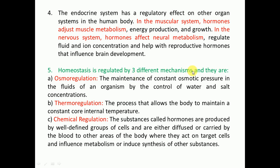Homeostasis is regulated by three different mechanisms. Osmoregulation is the maintenance of constant osmotic pressure in the body fluid of an organism by control of water and salt concentration. Thermoregulation is the process that allows the body to maintain a constant core internal temperature. Chemical regulation involves substances called hormones, produced by defined groups of cells or glands, which are diffused or carried by the blood to target cells and influence metabolism or induce synthesis of other substances to maintain homeostasis. These three — osmoregulation, thermoregulation, and chemical regulation — are the three pillars of homeostasis.